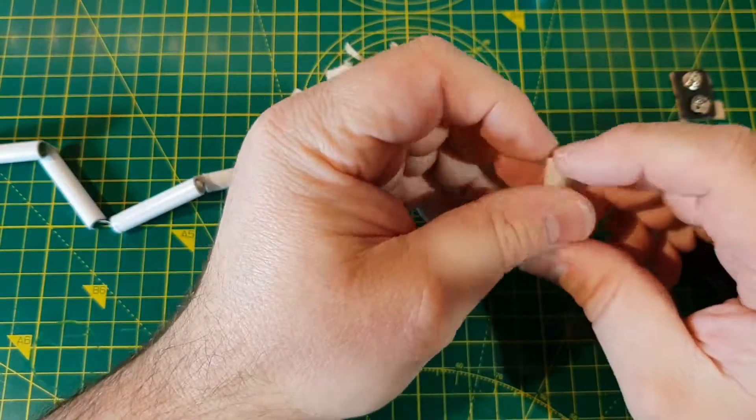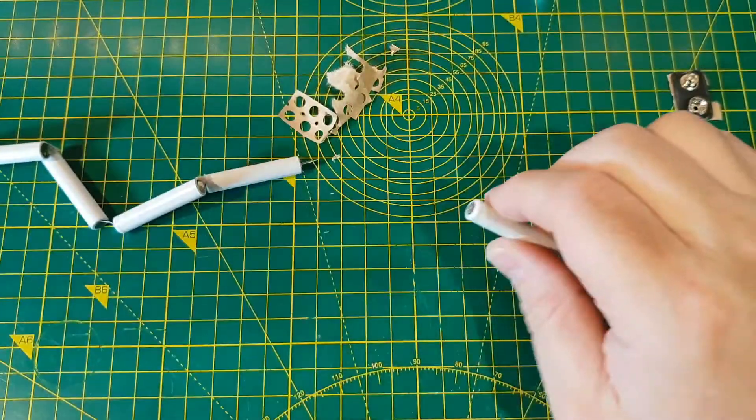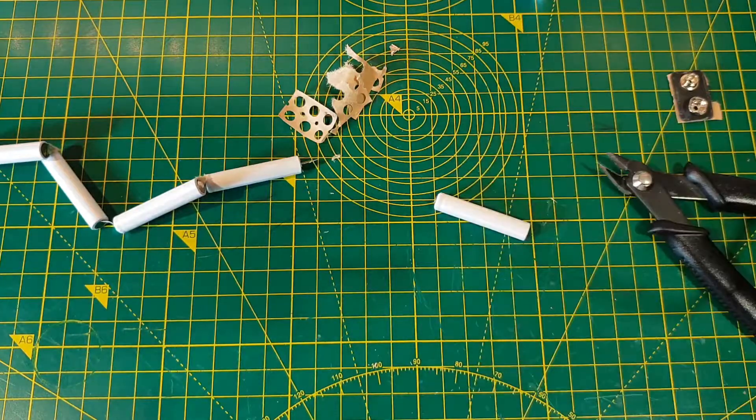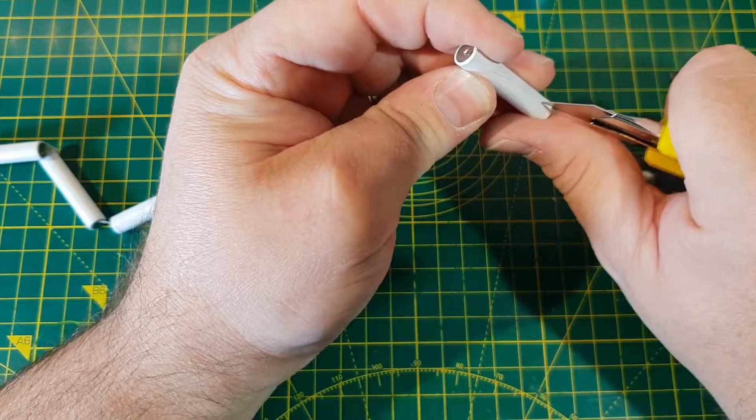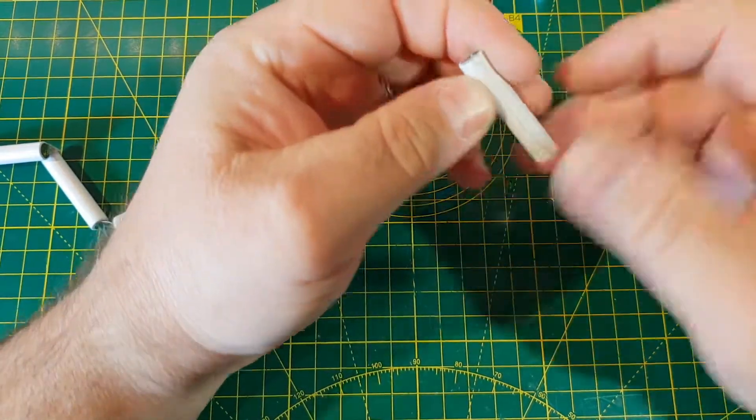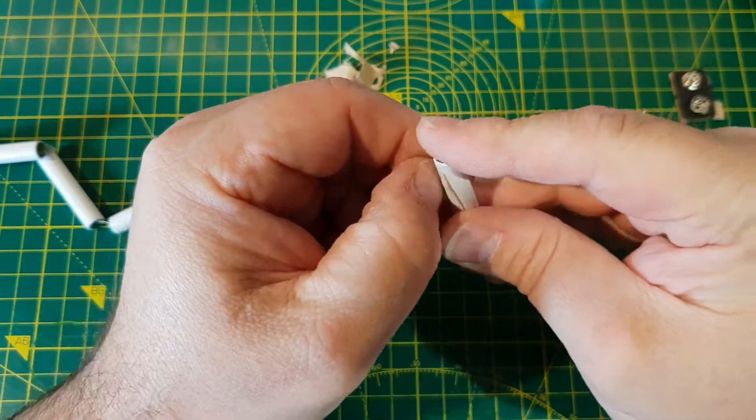That sort of matches with the zinc cell I took apart where the red internal wax was the negative end. Let's just slice this insulation off and see what's inside.